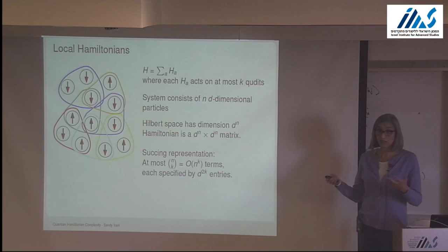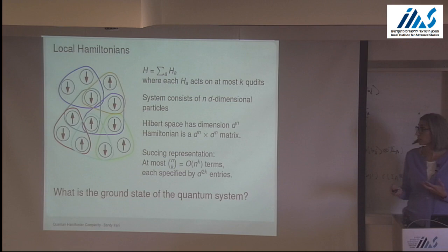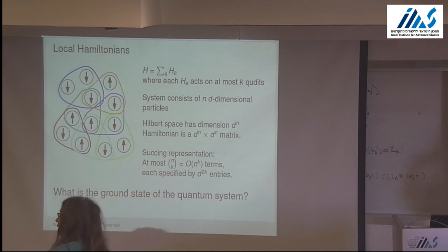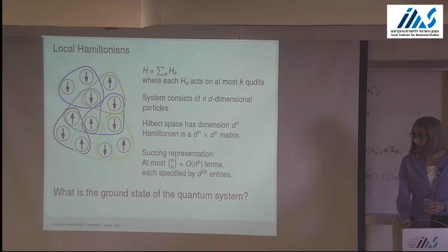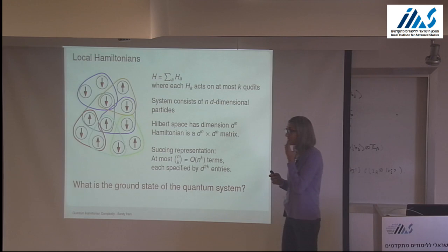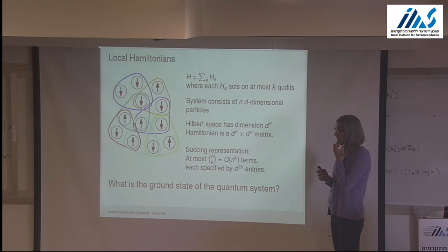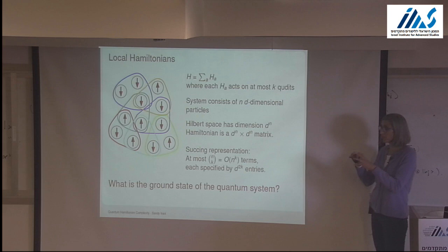We know you can compute the ground energy — the lowest eigenvalue — of a matrix efficiently, but the problem is this matrix is too large to work with directly. So we want to know the ground state of this system. Regarding the question of why locality is justified: we're thinking of spatial locality. Particles that are physically far apart presumably don't have strong energy interactions, so local terms characterize the energy interaction of physically close particles.